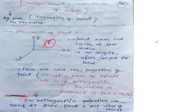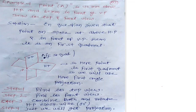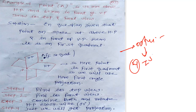Projection of a point means by default orthographic projection. In orthographic projection we need top view and front view — those two things. There are four types: first angle, second angle, third angle, and fourth angle — we discussed these in the last module. In India we use first angle projection, so we find top view and front view in first angle.